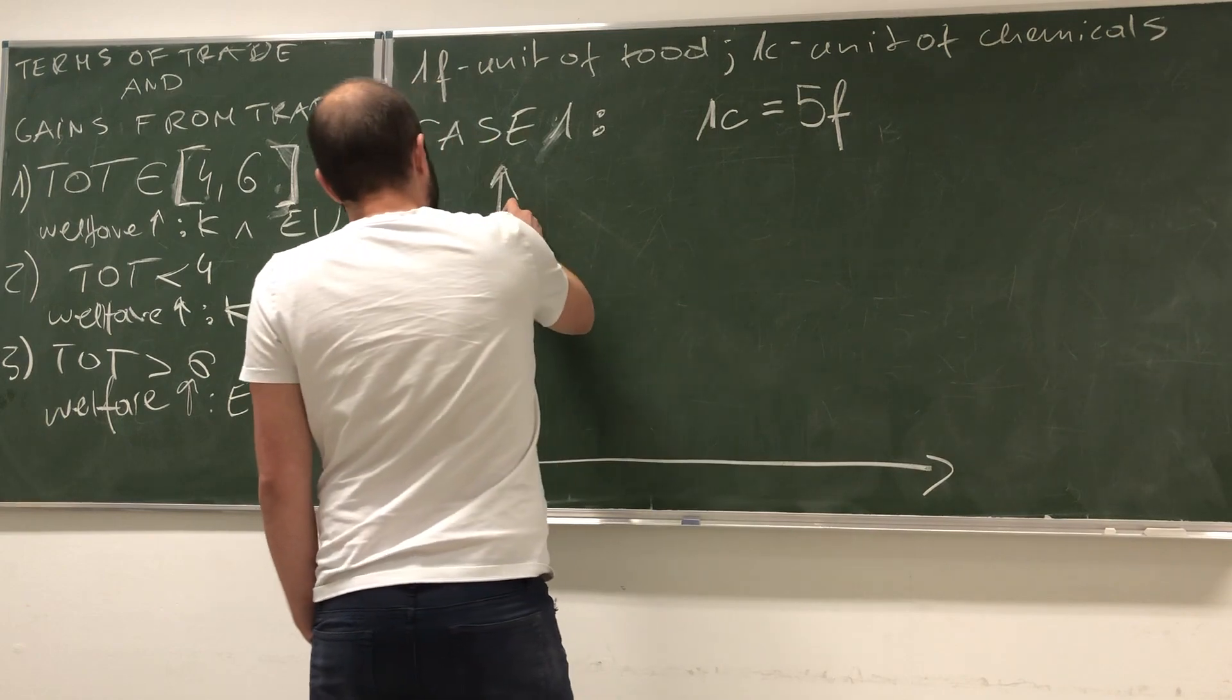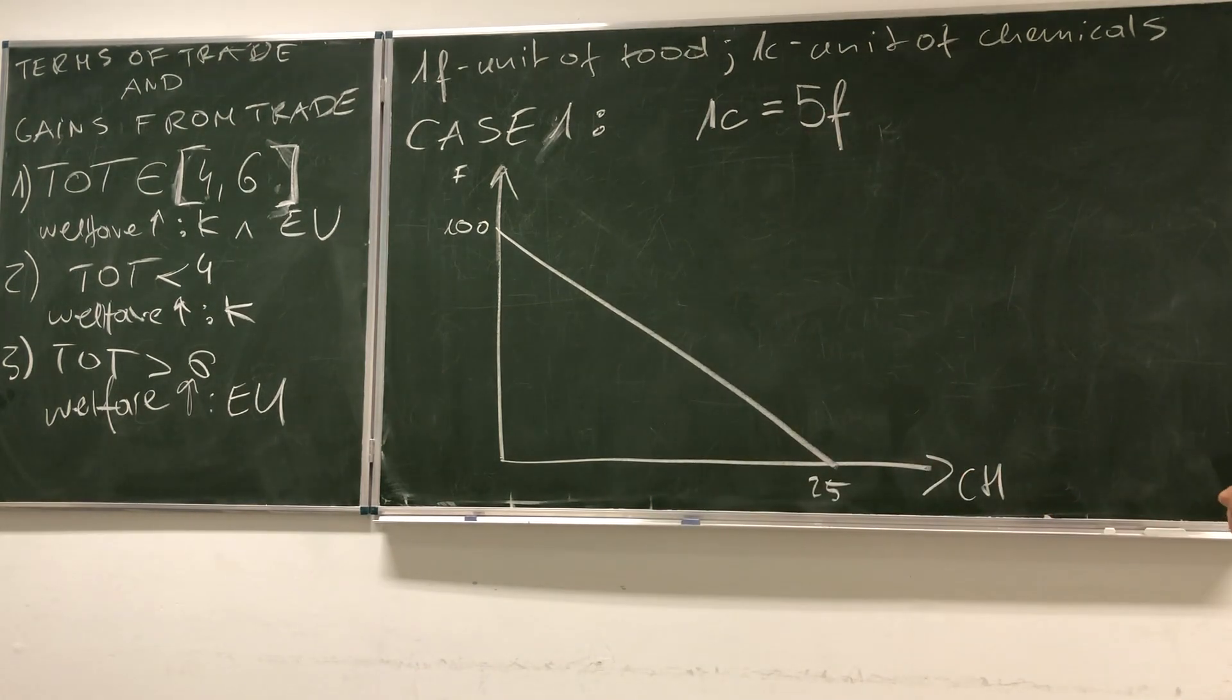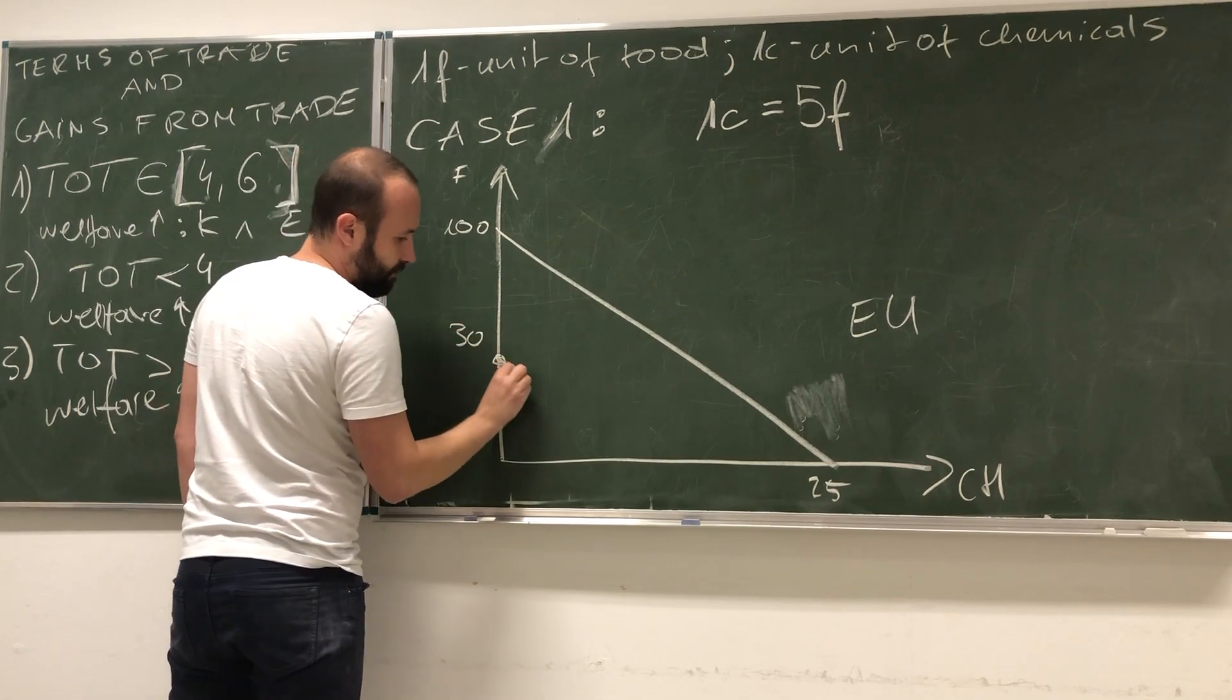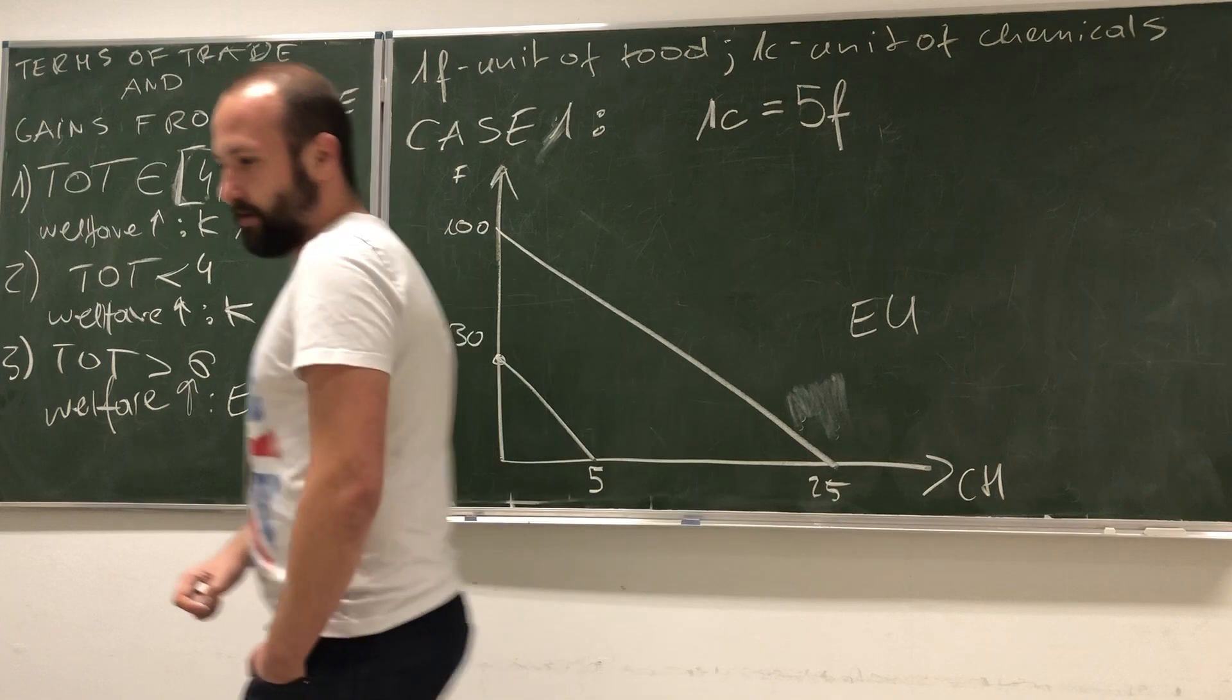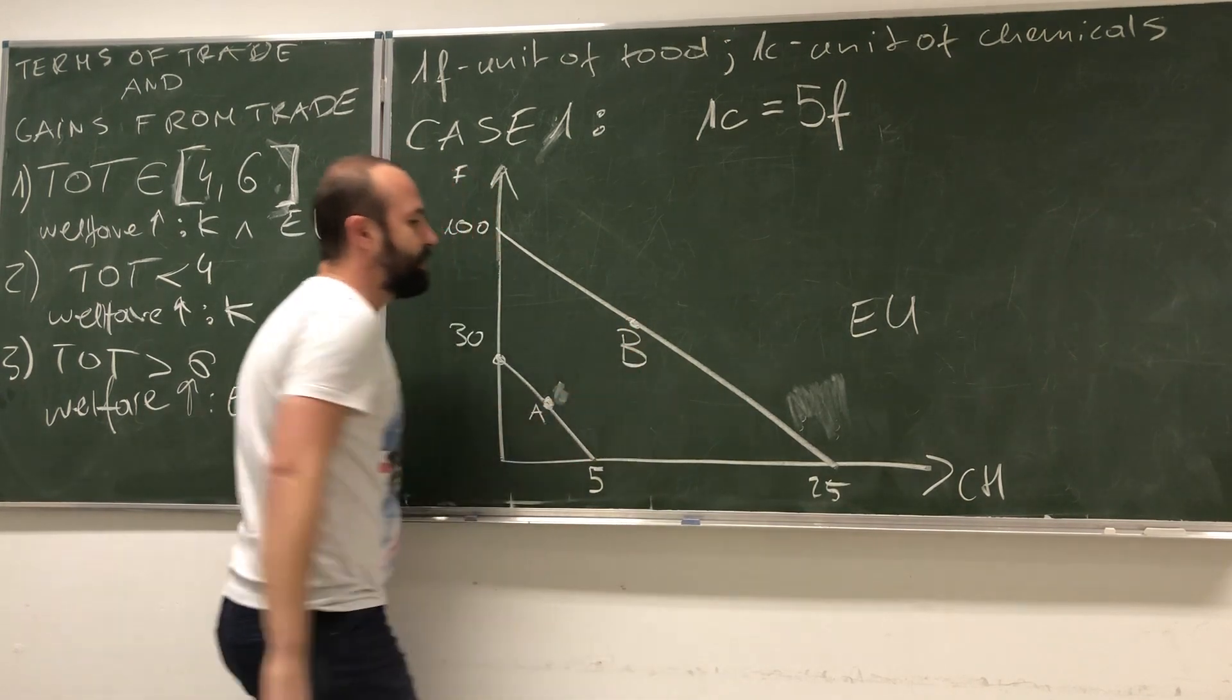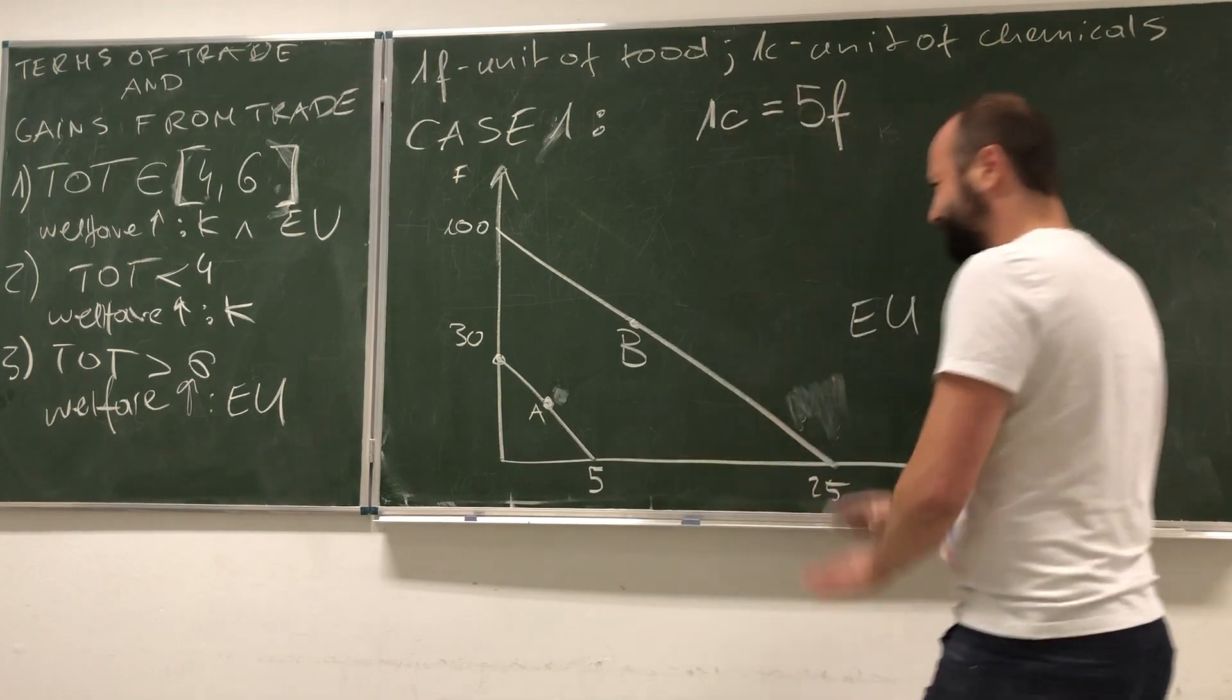Let's go back to the production possibility frontier we have. We have production possibility frontier for EU. We could produce 100 units of food and 25 units of chemicals. This is the EU. In case of Kenya we could produce either 30 units of food or 5 units of chemicals. Let's say that both of these countries have chosen A and B as their optimal points. Those we are taking from preferences.